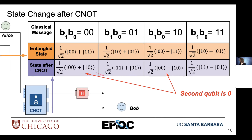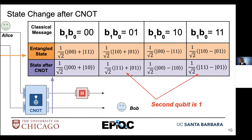Looking at these two qubits after the CNOT, we can tell we no longer have an entangled state because we're able to factor the state into tensor products of two separate quantum states. The second qubit is 0 in two terms and 1 in the other two terms, so the states can be factored. We are undoing that entanglement — step one complete with applying the CNOT.